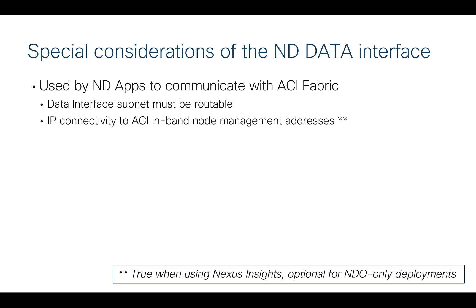There are some special considerations about the data interface. This is the interface the Nexus Dashboard applications will use to communicate with the ACI fabric. Obviously this subnet has to be routable so it can reach the fabric. Generally speaking, IP connectivity to ACI is going to be via the in-band management path — all ACI spines, leaves, and APICs will have an in-band management IP assigned, and these are the IPs that the Nexus Insights app uses to contact and gather telemetry. Note this is true specifically when using the Nexus Insights application.